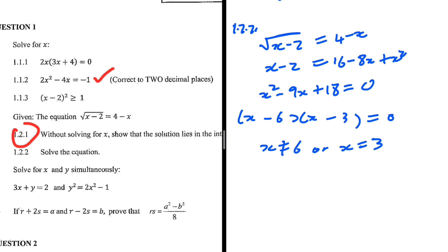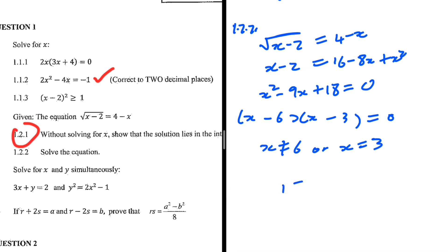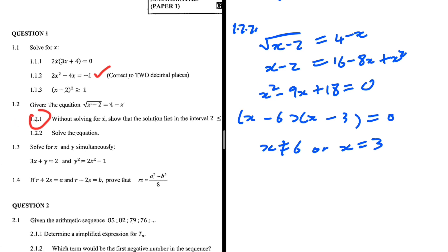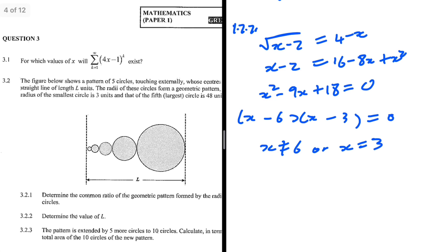Substituting x equals 3: square root of 3 minus 2 is square root of 1, which is 1, and 4 minus 3 is 1. Both sides equal 1 — x equals 3 is confirmed as the solution. That is 1.2.2. Let me know in the comments how you solved 1.2.1, and which question you'd like me to do next — question 2 or question 3.